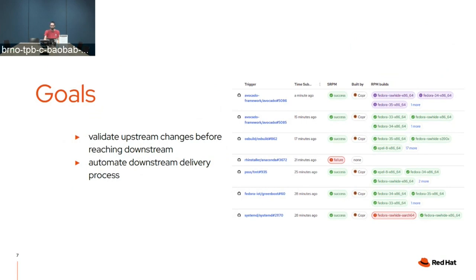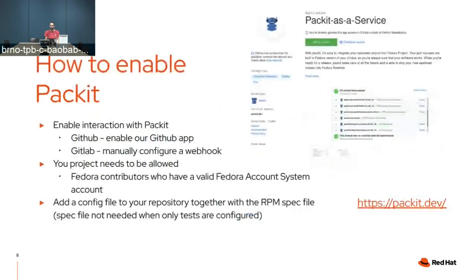We also try to automate the upstream delivery process as much as possible so it's very convenient to get new updates into Fedora Linux. If you're interested in trying it, it's pretty straightforward. We have a native GitHub application — just go there, install it, and follow the steps. This is all documented on our website, packit.dev, where you can find the guide in the user documentation. In GitLab it's a little more complicated since GitLab doesn't have native integration, so you need to configure webhook delivery yourself.